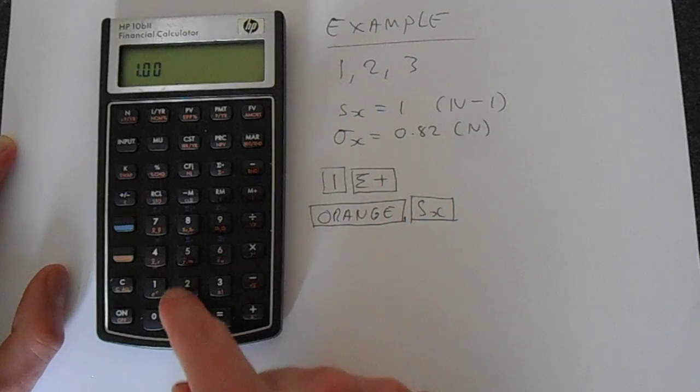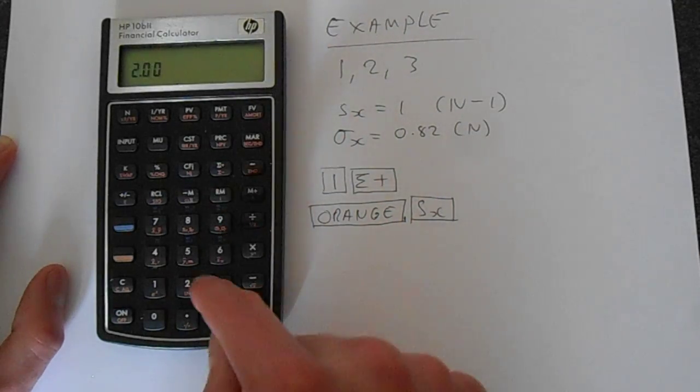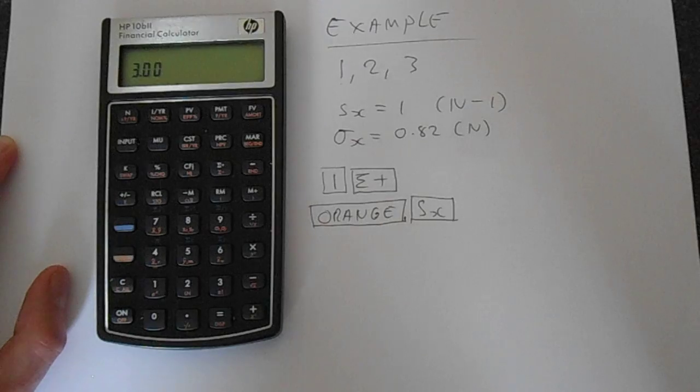and this keeps count of the things we've entered. Then 2, sigma plus, 3, sigma plus is telling us we put 3 data points in.